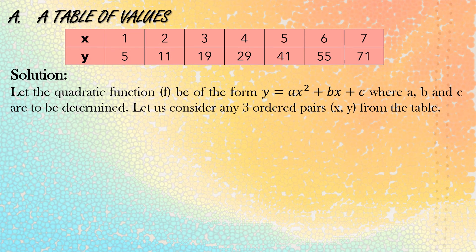For the solution, let the quadratic function f be of the form y equals ax squared plus bx plus c, where a, b, and c are to be determined. Let us consider any three ordered pairs (x, y) from the table. We will use the ordered pairs (1, 5), (3, 19), and (4, 29). These will give us equations 1, 2, and 3.